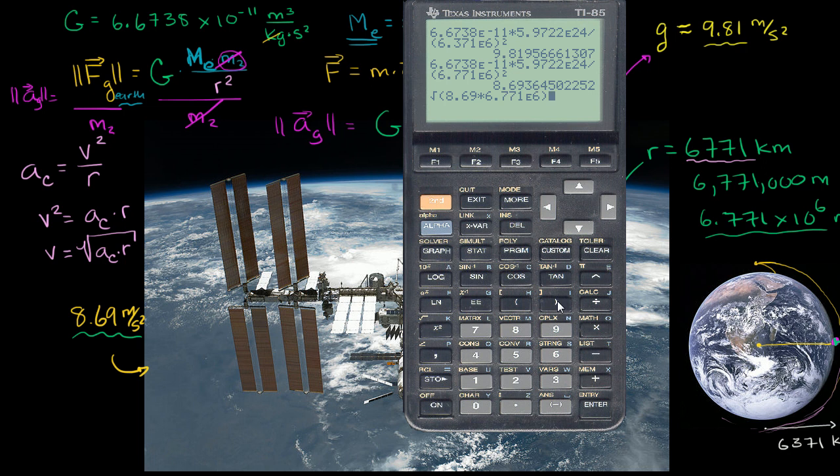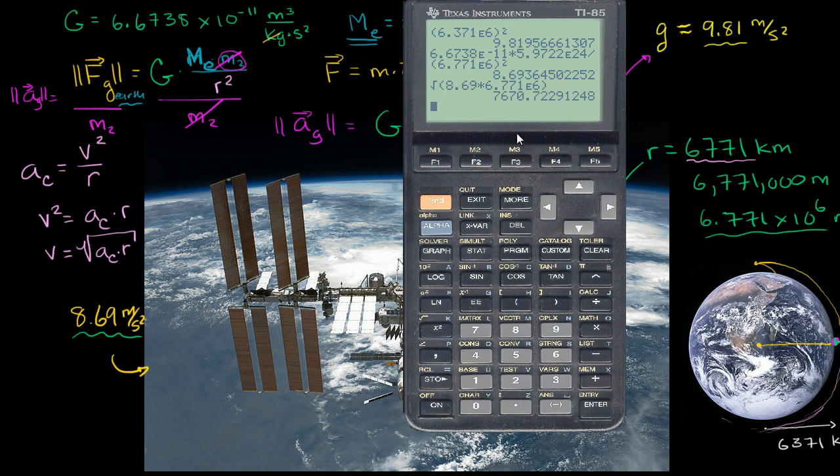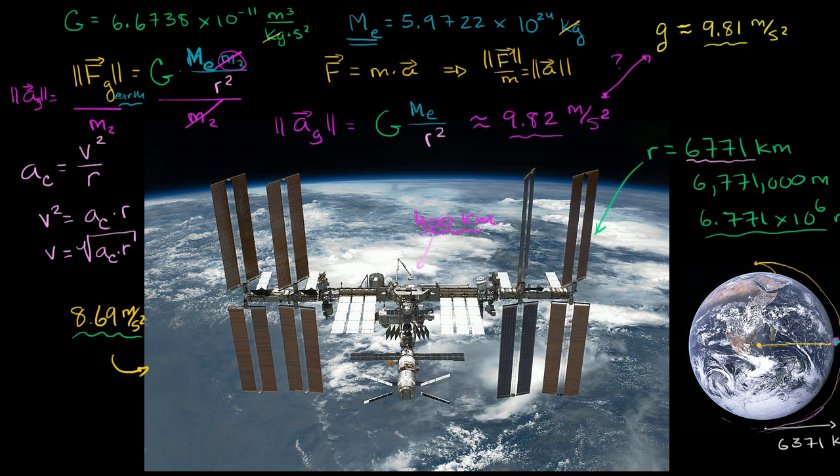And then we get a drum roll for how fast. And this is going to be in meters per second. We already thought about how the units will work out. We get 7,670 meters per second. I'm just going to stick to three significant digits. The necessary velocity to stay in orbit is 7,670 meters per second.